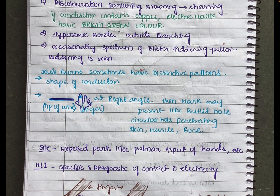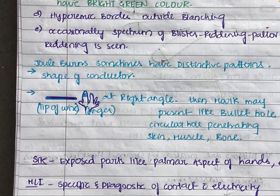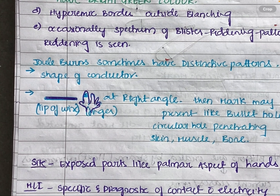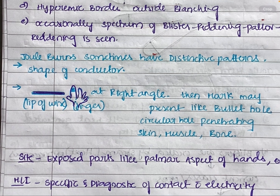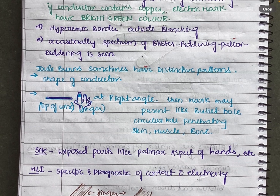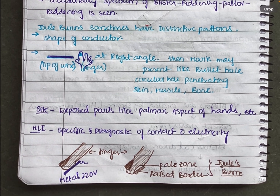Joule burns sometimes have distinctive patterns and can take the shape of the conductor. If the electric wire is at right angles to the finger, it can create puncture holes, and the mark may present like a bullet hole — a circular hole penetrating the skin, muscle, and bones. The sites most commonly affected are exposed parts of the body such as the palmar aspects of the hands and the chest.